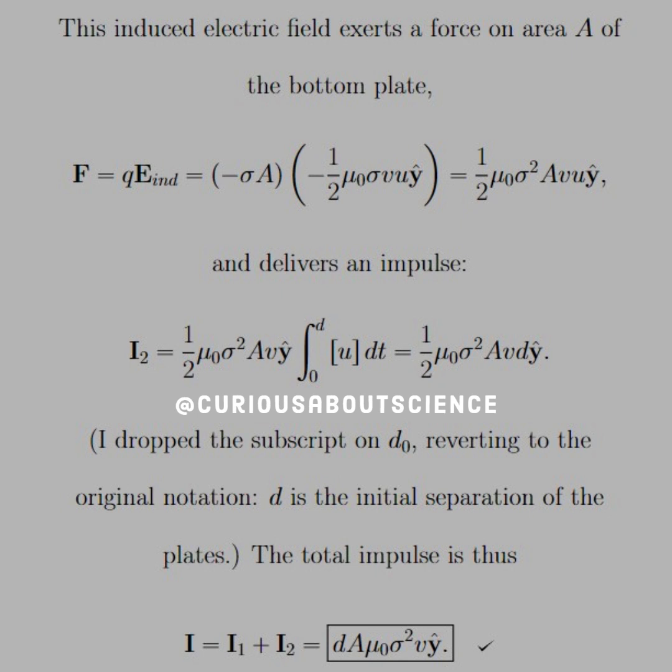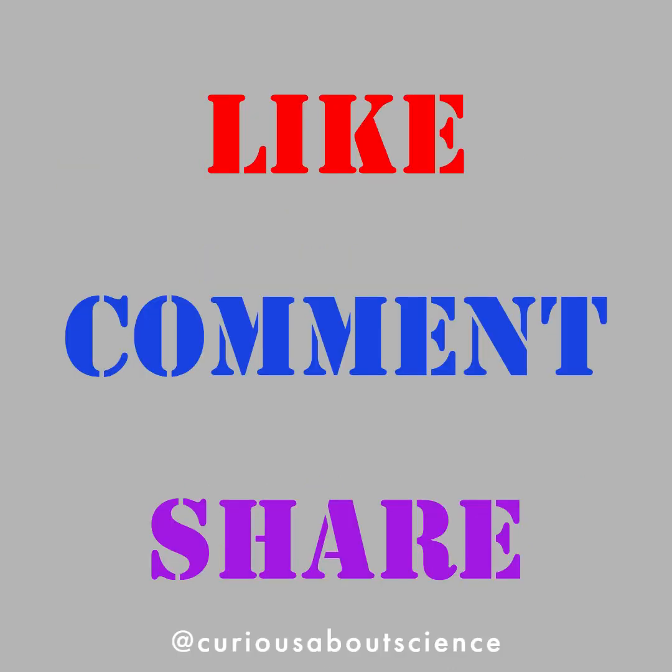And the total impulse is thus I equals I1 plus I2, hence d A mu0 sigma squared v, which, if you notice from part A, is the same thing. That's pretty darn clever. And this will definitely have carryover coming into the next chapter as well. So pay attention. Thank you.